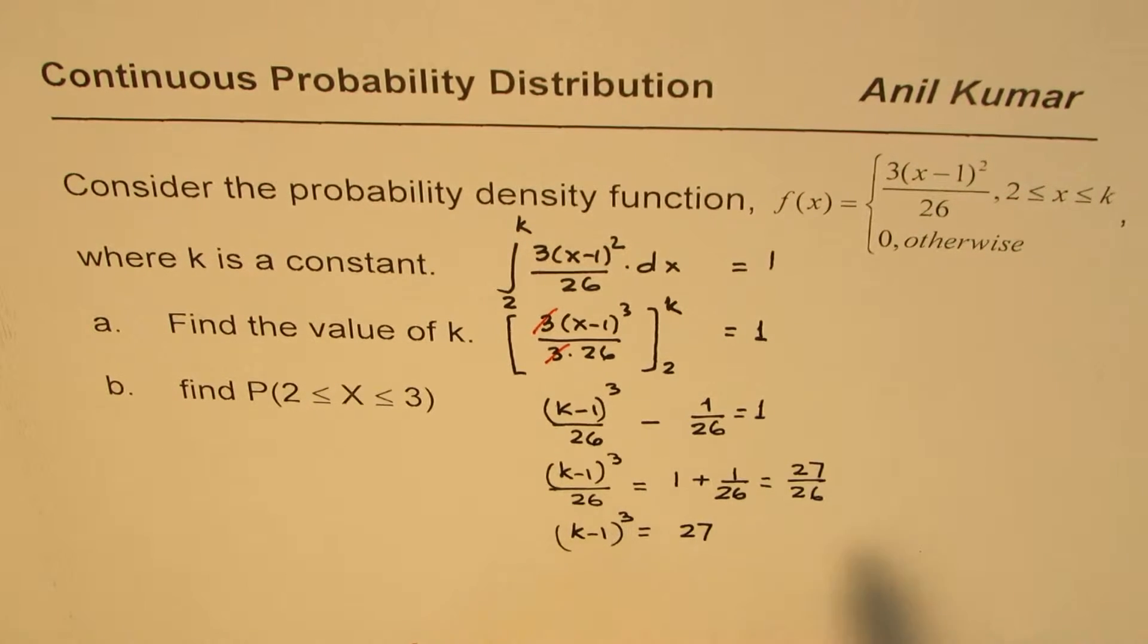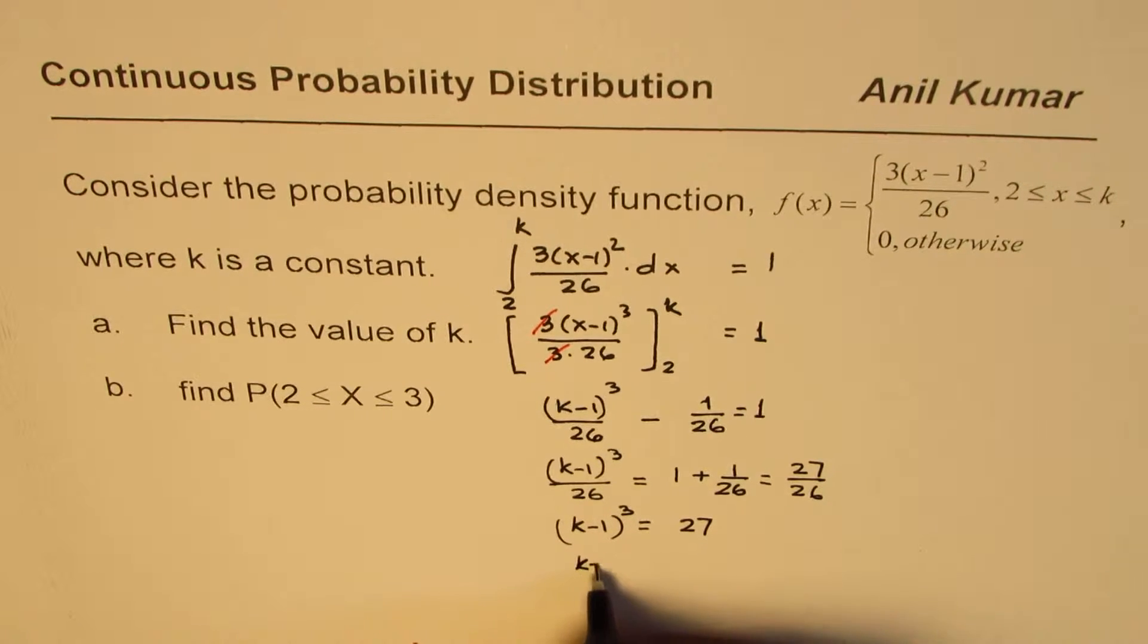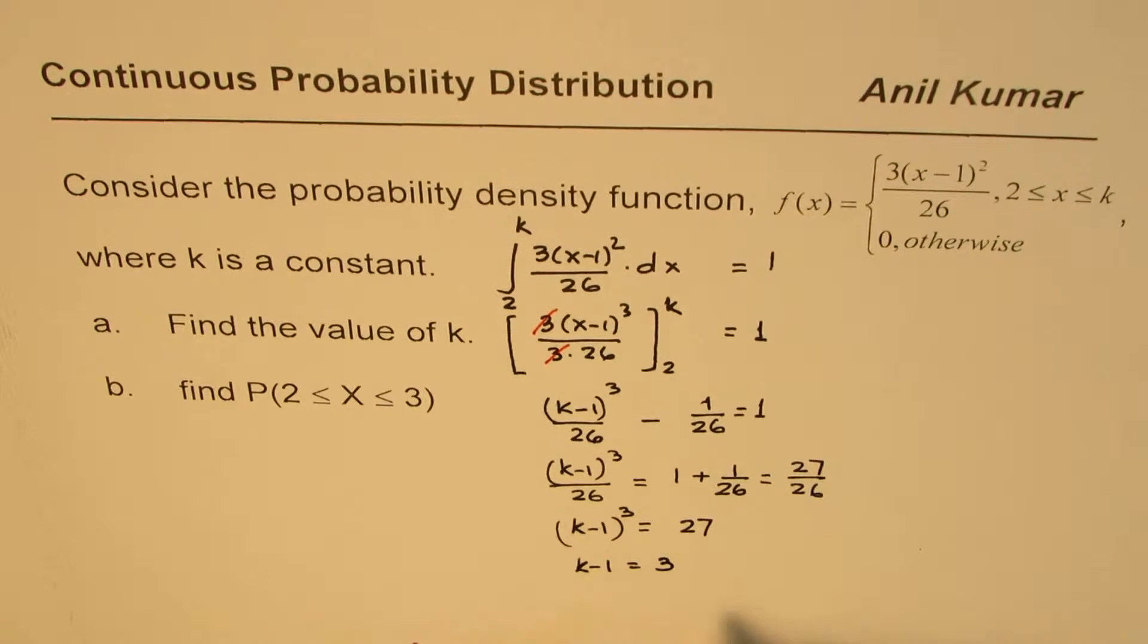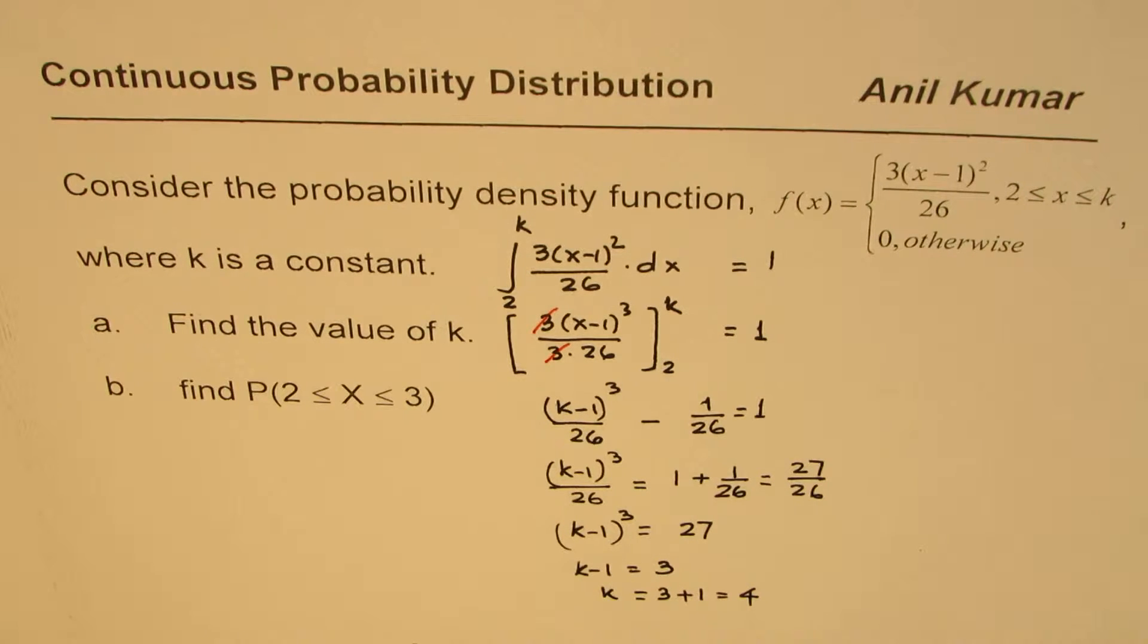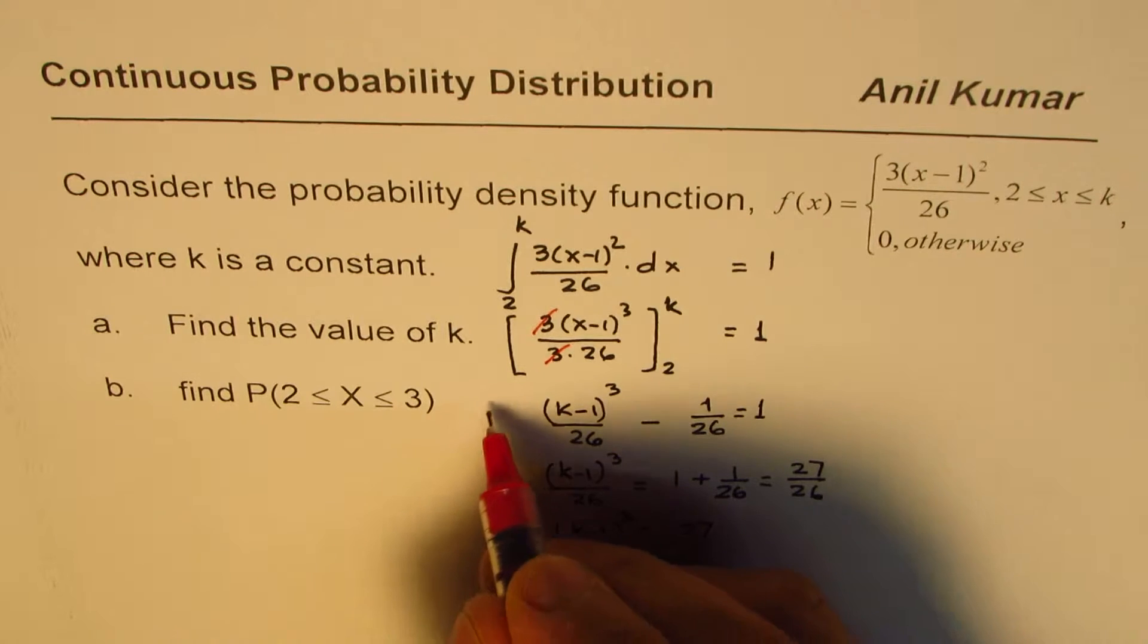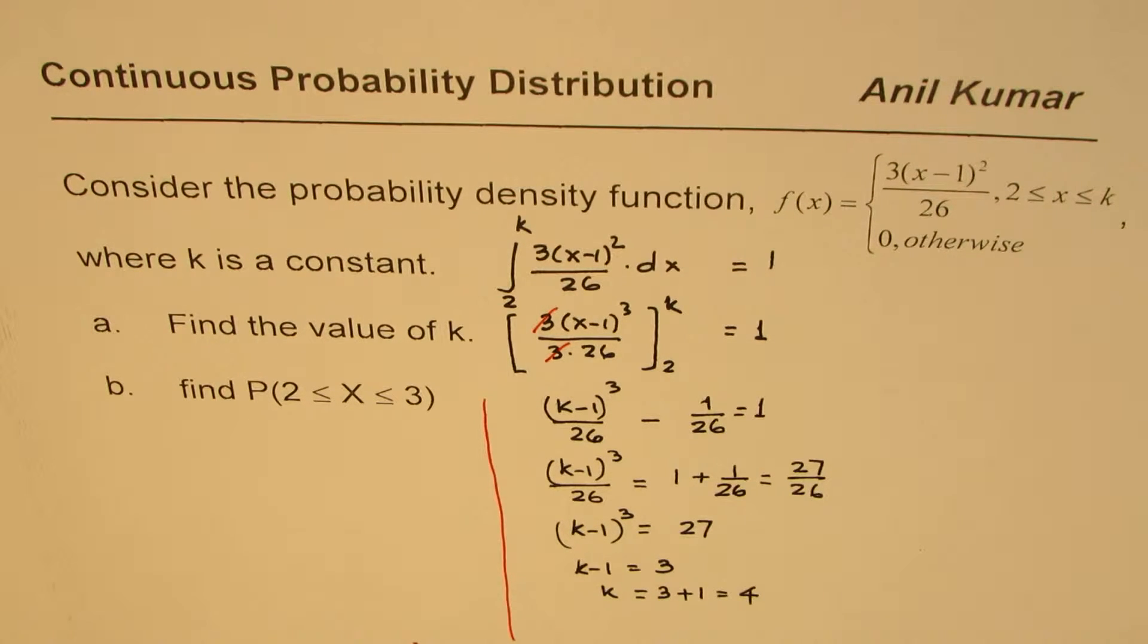Cube of 3 is 27, that means k-1 is equal to 3, and that gives us k is equal to 3 plus 1, which is 4. So we can find the value of k in this fashion. That is how we get the value of k, the limits for the random variable.